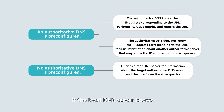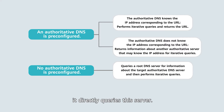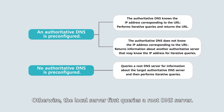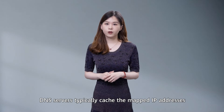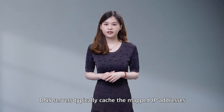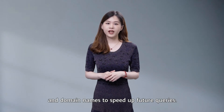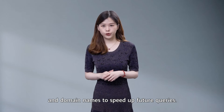If the local DNS server knows where the authoritative DNS server is, it directly queries this server. Otherwise, the local server first queries a root DNS server. The root DNS server then tells the local DNS server which authoritative DNS server it should query. DNS servers typically cache the mapped IP addresses and domain names to speed up future queries.